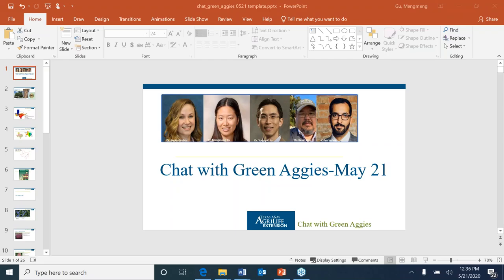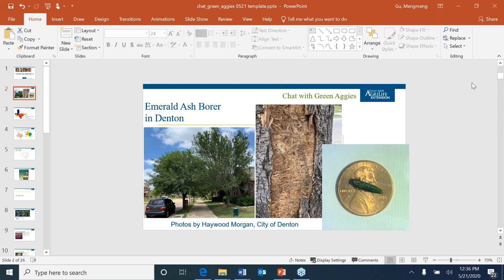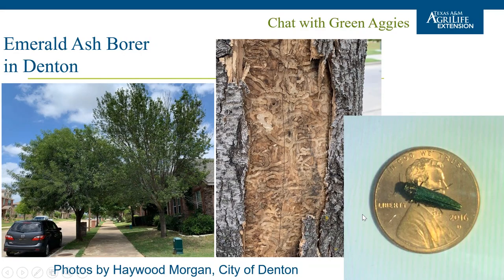That concludes the thrips segment. We'll provide everyone's handouts — including the thrips spreadsheet — in next week's chat since this week already has five handouts. In the handout panel you'll find two rose rosette handouts and three EAB — Emerald Ash Borer — handouts, as this has been an emergent issue.